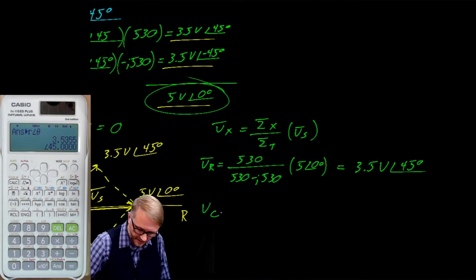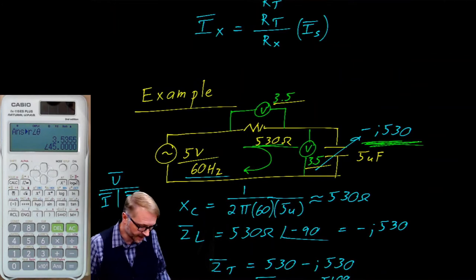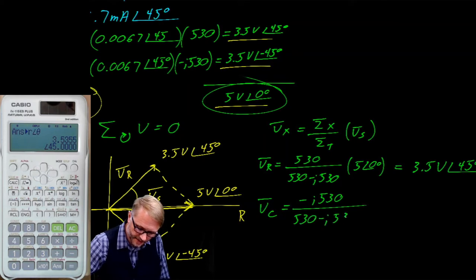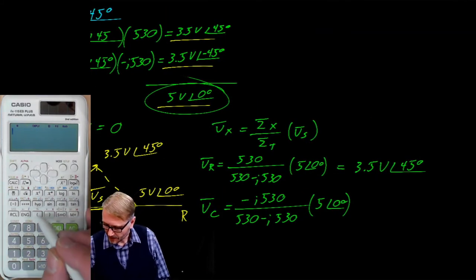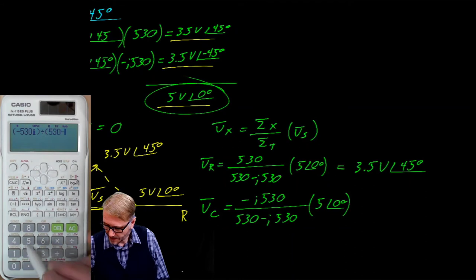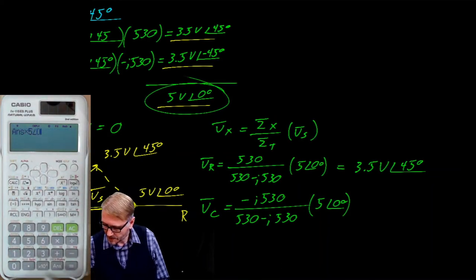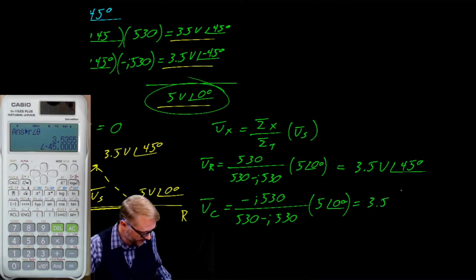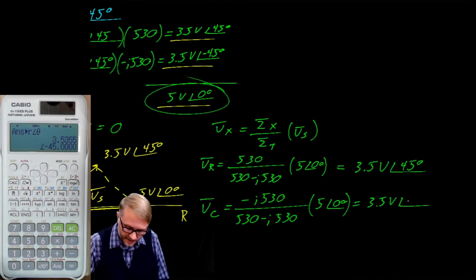For practice, we do the same for the capacitor voltage. The impedance of interest is −j530. So: (−j530) / (530 − j530) × 5∠0°. Entering into the calculator: −530j divided by (530 − j530), close parenthesis, equals, then multiply by 5 at 0°, shift to polar form. The result is 3.5 volts at a phase angle of −45°.